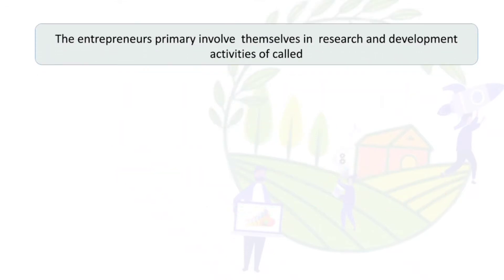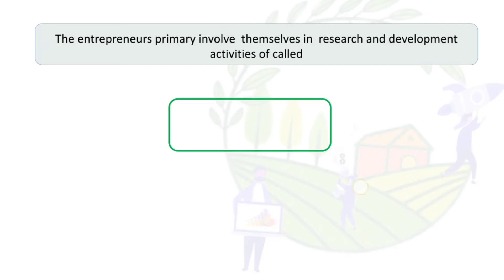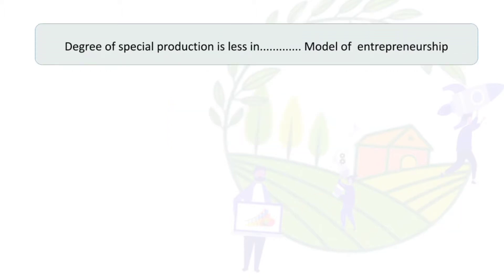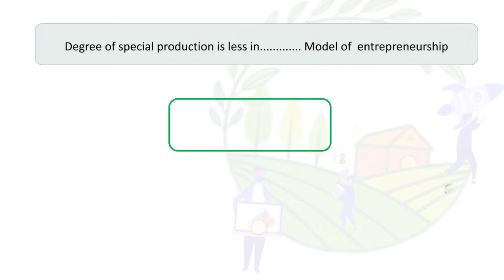The entrepreneurs primarily involved themselves in research and development activities. In which model of entrepreneurship is the degree of special product less for innovative entrepreneurs? The answer is the free market model.